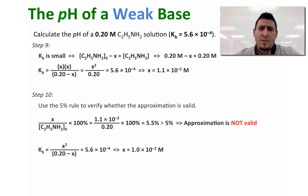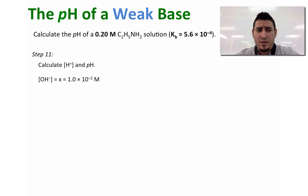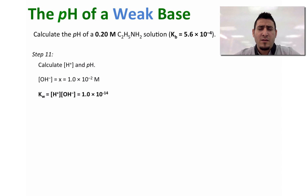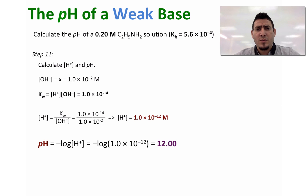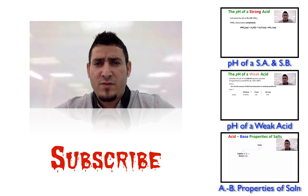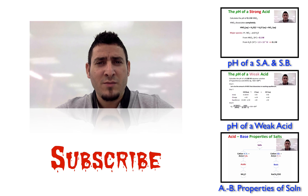Now that we have X, X is the concentration of OH⁻. In step eleven, we find the concentration of H⁺ from the concentration of OH⁻. We know that Kw equals the product of the concentration of H⁺ and OH⁻. So the concentration of H⁺ is equal to Kw divided by the concentration of OH⁻, which equals 1.0 times 10 to the power minus 12. We then calculate the pH as minus log of the concentration of H⁺, giving a pH equal to 12. I hope this video was helpful. Please like, share, and subscribe, and I will see you next time.